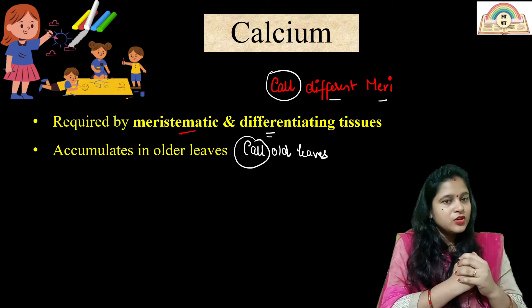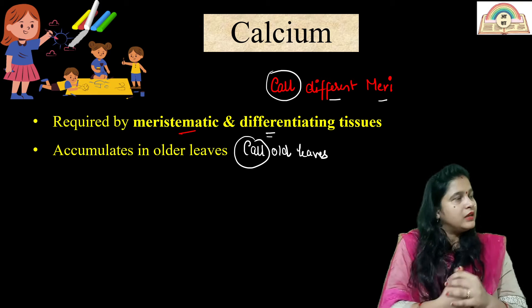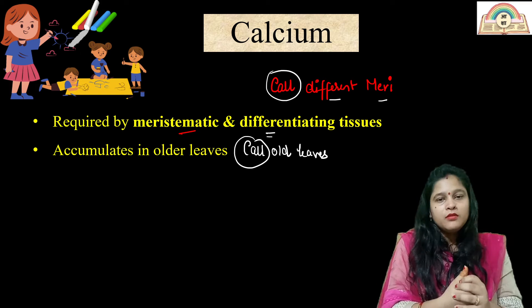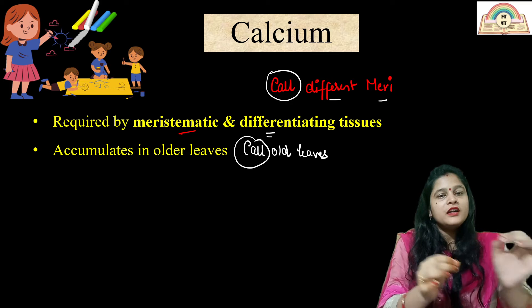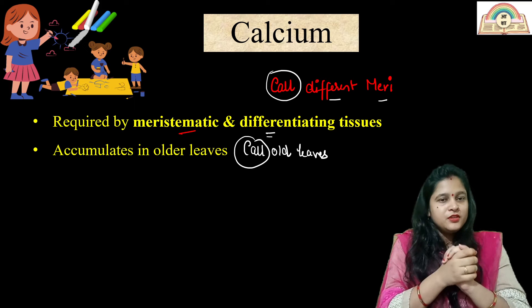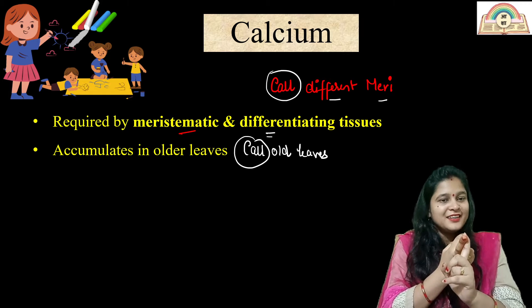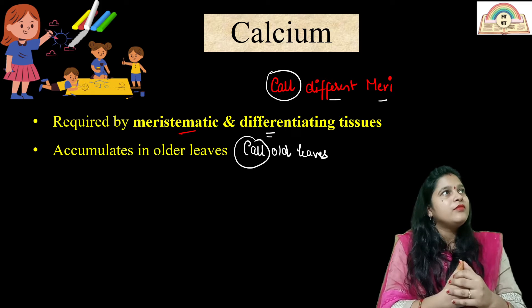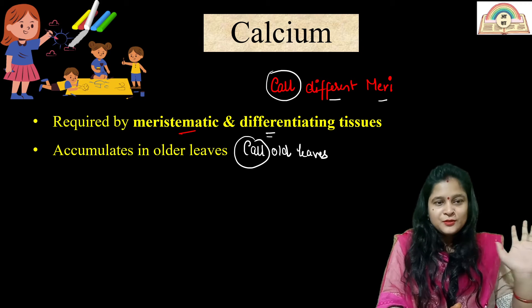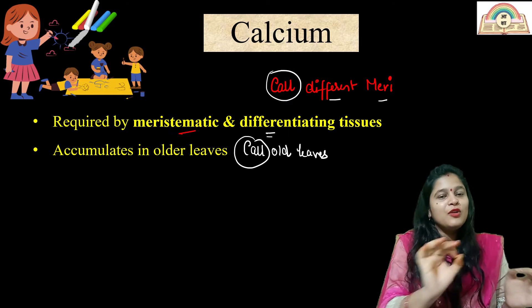I have two mnemonics for this. 'Call Different Mary' — Call is for calcium, Different is for differentiating tissue, Mary is for meristematic tissue. And 'Call Old Leaves' — whenever we are in trouble, we call the elder people in our home. So calcium accumulates in older leaves.